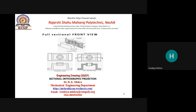The important point regarding orthographic projection is we always make the orthographic projection in the first coordinate or first angle, and the third coordinate or third angle. As this diagram shows, this is our product. This is our section plane - by this section plane we cut the object vertically.